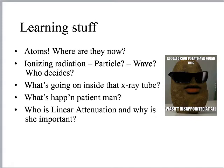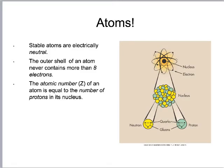Let's start with atoms. A stable atom is electrically neutral — these are the smallest particles that maintain characteristics of elements found in our universe. Subatomic particles are smaller but are not distinct elements. Within the atom we have a nucleus composed of protons and neutrons. Protons are positively charged; neutrons are simply neutral — not neutrally charged, just neutral.